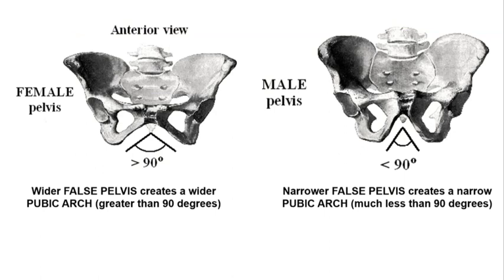Returning to the anterior view, a wider false pelvis in females also creates a wider pubic arch — the U-shaped structure underneath where the two pubic bones are joined — generally greater than about 90 degrees. In the male pelvis, the much narrower and more vertical false pelvis creates a much more narrow pubic arch, generally less than 90 degrees.